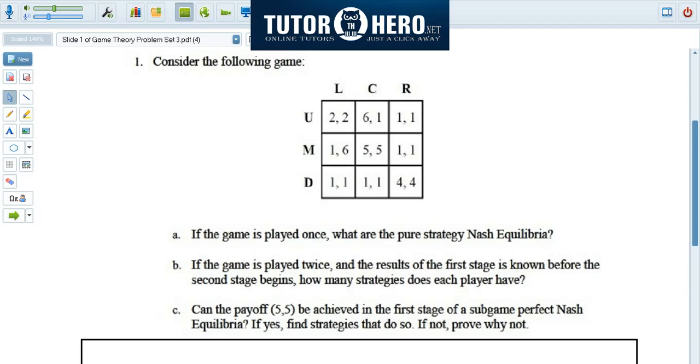Nash equilibrium occurs when every player is engaged in a best response to the decisions of the other player. What does that mean? It means that given what you're actually doing, I am doing the best thing for me, and given what I'm actually doing, you are doing the best thing for you.